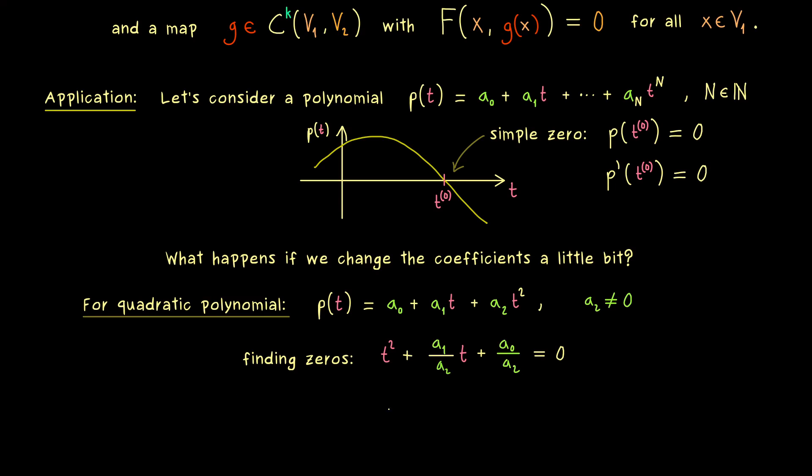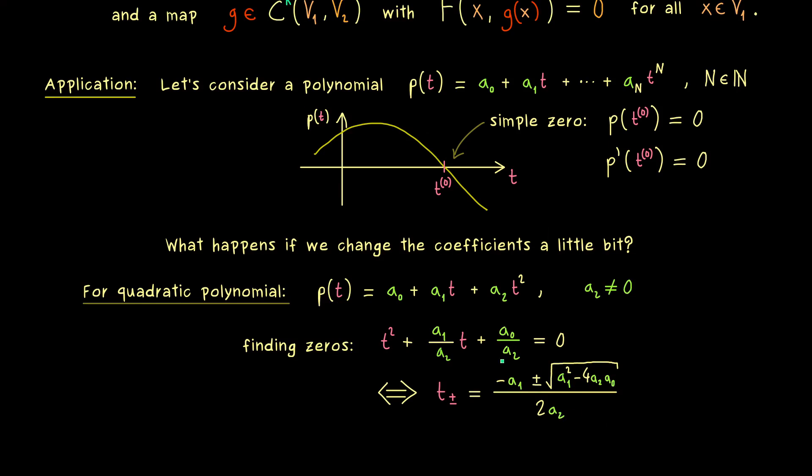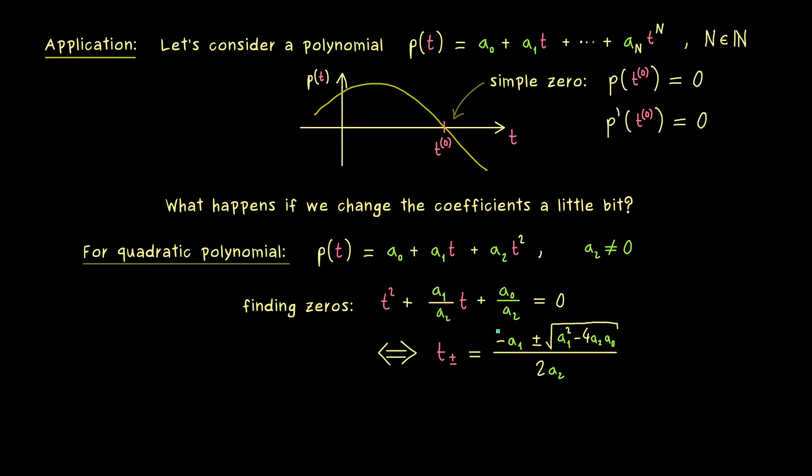And now by applying your school knowledge you can write down the general solution formula for this. Indeed we find two solutions and let's call them t₊ and t₋. And there we have a whole fraction where 2a₂ is in the denominator. And in the numerator we have -a₁ plus minus a square root. So in general we would need complex numbers to see both solutions of this quadratic equation.